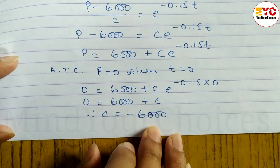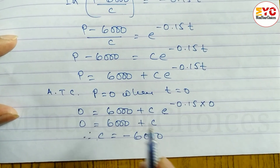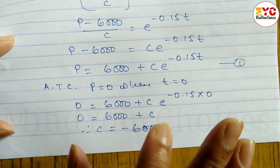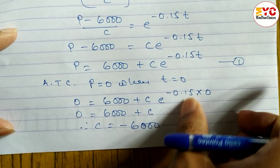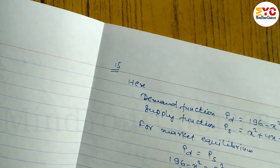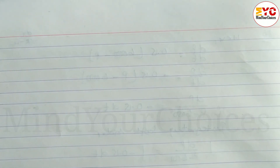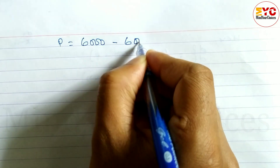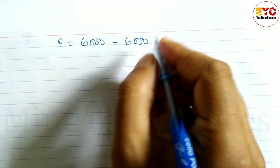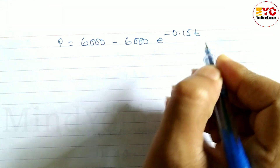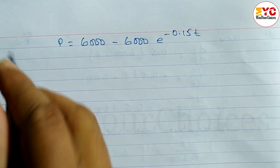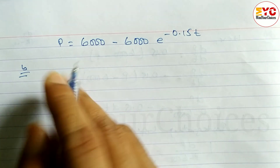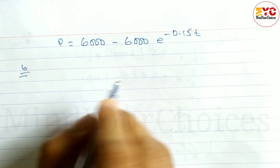The value of C is minus 6000. Substituting back into the equation, the differential equation solution is: P equals 6000 minus 6000 times e to the power minus 0.15t. This is the answer to part A. For part B, we calculate the population after 10 years, when t equals 10.